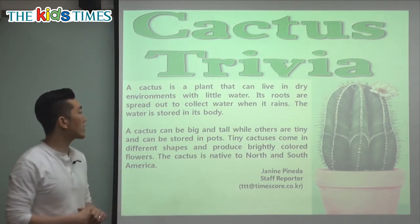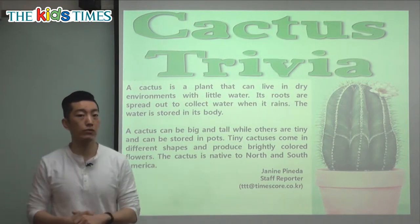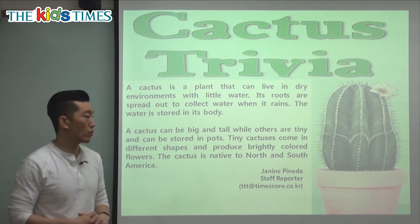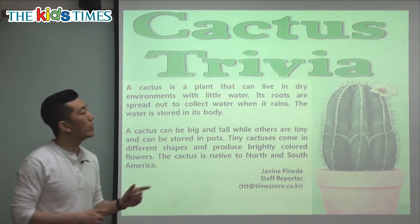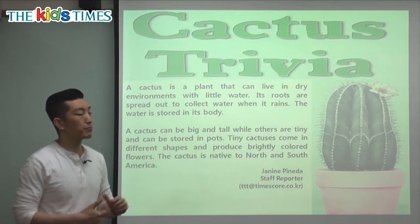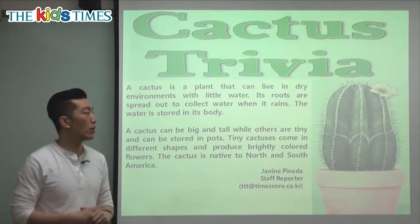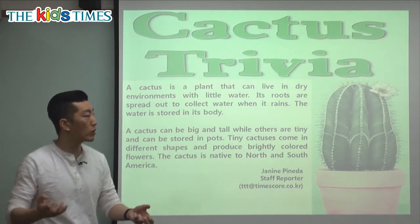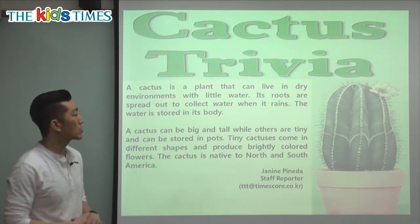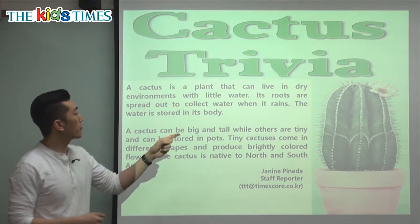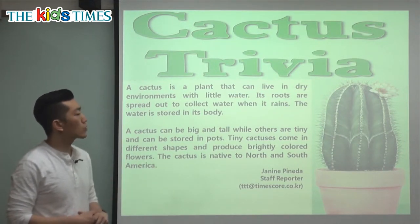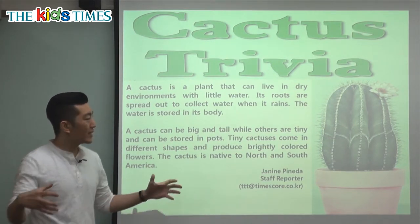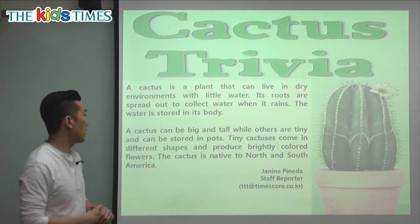Its roots are spread out to collect water when it rains. We can't see the roots because they are underneath the soil or the ground. Because the cactus lives in places with very little water, the roots are very spread out, so when it does rain, they soak up as much as possible. The water is then stored in its body.